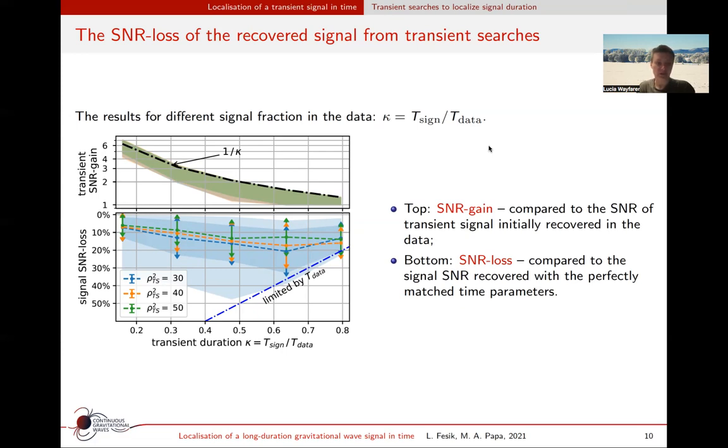In the bottom plot, the maximum recovered SNR is normalized by the actual signal SNR and shows the signal SNR loss, which is limited by the SNR recovered in all the data given by the blue dashed line in the bottom plot. We show the mean and the standard deviation of the SNR loss. Due to uncertainties in the middle time estimation, we have the maximum mean SNR loss for a pretty long transient with kappa about 0.65, and the maximum mean SNR loss is about 20 percent.